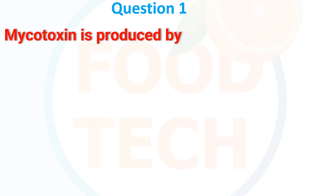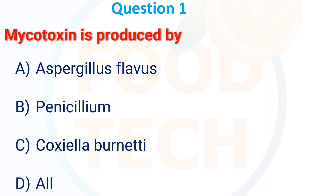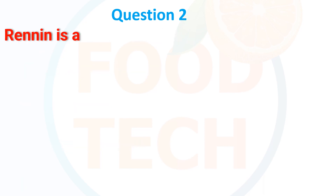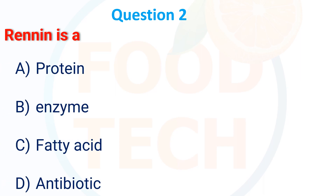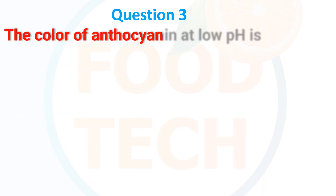Mycotoxin is produced by: A) Aspergillus flavus, B) Penicillium, C) Coxiella burnetii, D) All. The answer is Aspergillus flavus. Rennin is: A) a protein, B) an enzyme, C) a fatty acid, D) an antibody. The answer is enzyme.